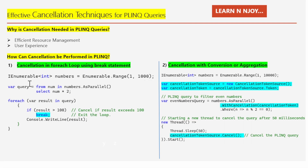In the first technique — cancellation in a ForEach loop using a break statement — we use a ForEach loop to consume results from a PLINQ query. If a condition is met, we can simply break out of the loop to cancel the query. Let's understand this with the help of an example.